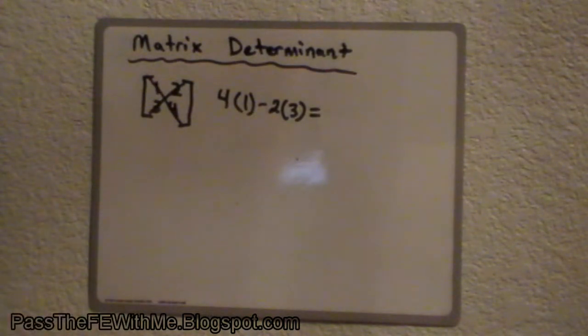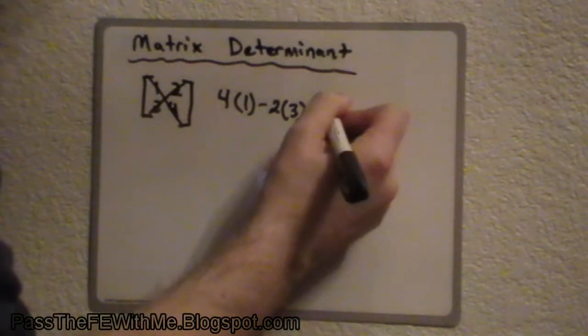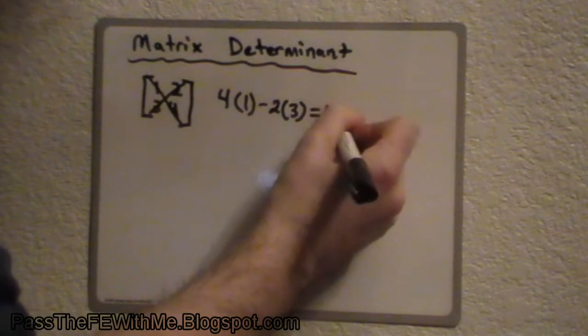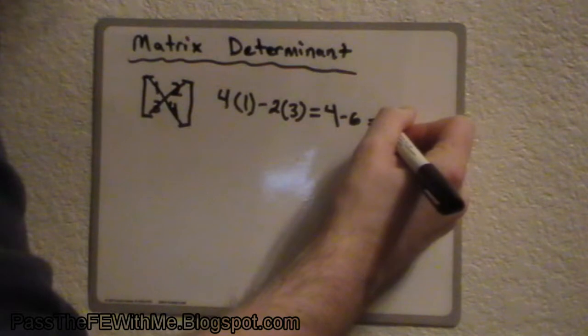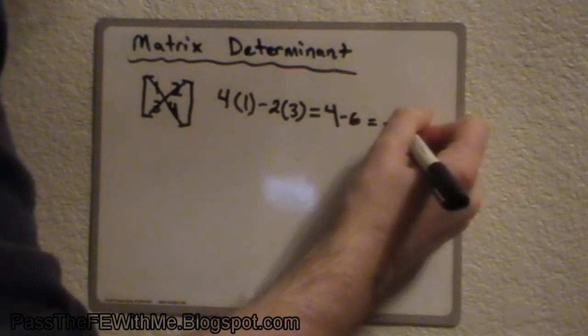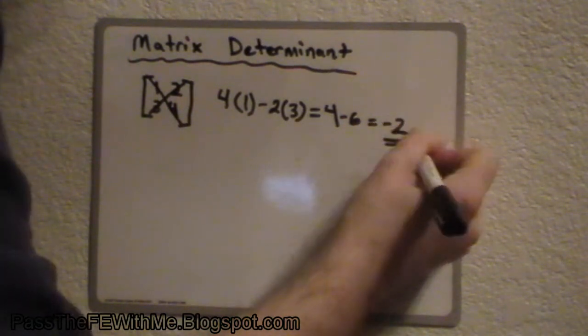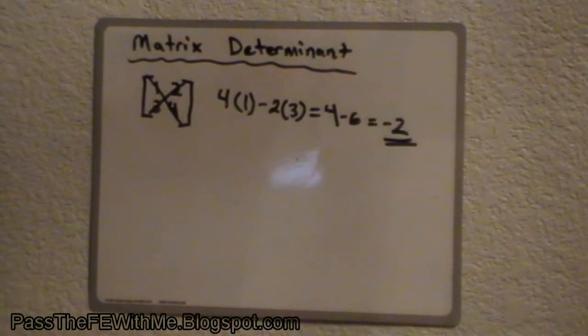And this is a pretty simple calculation. I could skip a step, but I'll just carry it through, just so you can see. That will equal 4 minus 6. And that will bring us to the final answer of negative 2. So, as you can see, that's pretty straightforward.